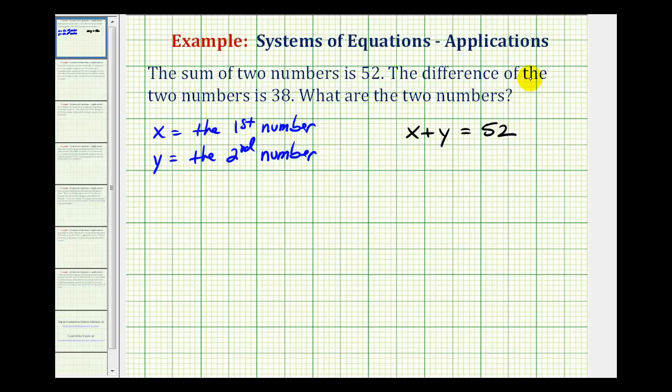And then we're told the difference of the two numbers is thirty-eight. And since difference means subtraction, the second equation will be x minus y equals thirty-eight.